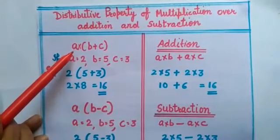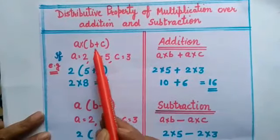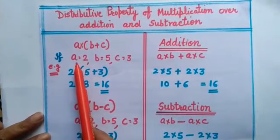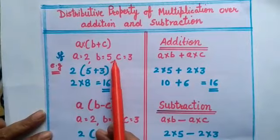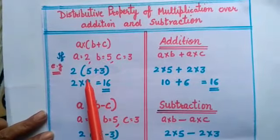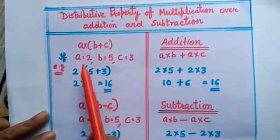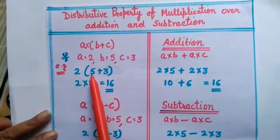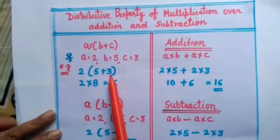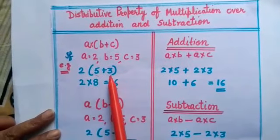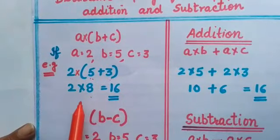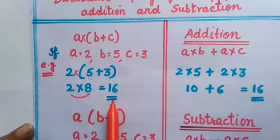Here we have A into B plus C. If we take the values A=2, B=5 and C=3, and put these values in, we add 5 and 3 to get 8, then multiply by 2 — giving us 2 into 8, which equals 16.